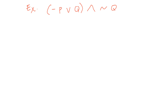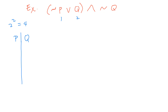Looking at the expression, there is a wavy symbol, so that would be not p, then OR q, AND then not q. You have to look at how many inputs you have — you see two letters, p and q. The formula is 2 to the power of 2, giving 4 possible combinations, so we will construct columns for p and q.